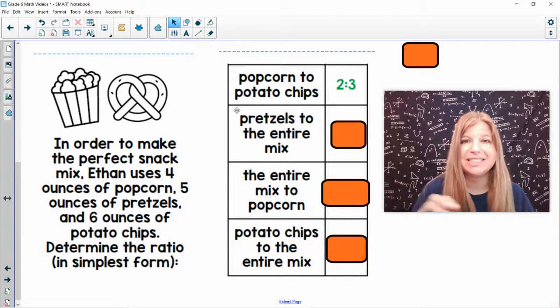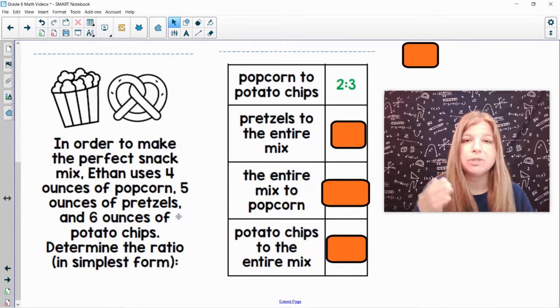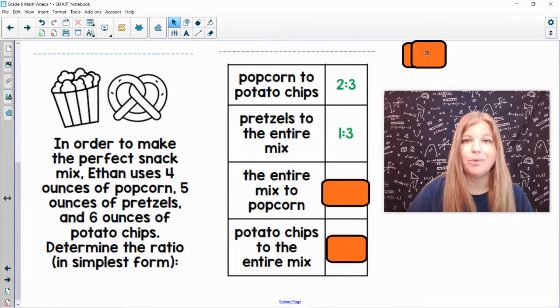Pretzels to the entire mix. So it says that there's five ounces of pretzels, and the entire mix is four plus five, which is nine, plus six, which is 15. So if I'm comparing five to 15, I could write that five to 15. But what are five and 15 both divisible by? Five. So if I simplify five fifteenths, I would end up getting one to three, one third.